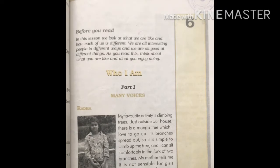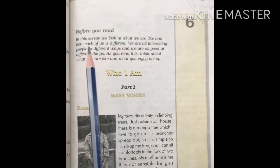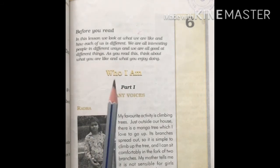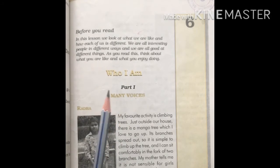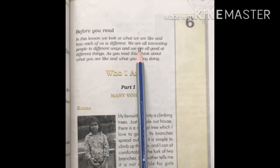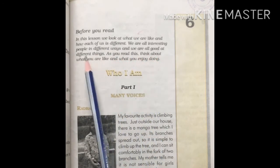Today we will study chapter number 6, Who I Am. In this lesson, we look at what we are like and how each of us is different. We all people are different from each other — हम सब इंसान, फिर भी हर एक इंसान दूसरी इंसान से अलग है. What makes us different? क्या हमको अलग बनाता है? We are all interesting people in different ways and we are all good at different things.